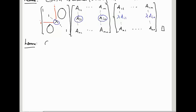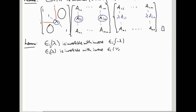If E_IJ lambda is invertible with inverse E_IJ minus lambda, and E_I lambda is invertible with inverse E_I 1 over lambda. So this is the main reason why we required lambda to be non-zero for type 2, because we want to be able to divide by lambda.